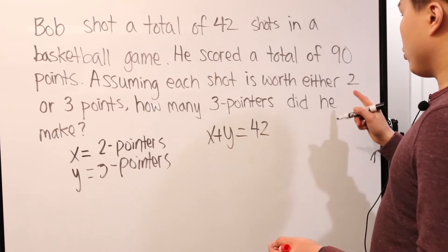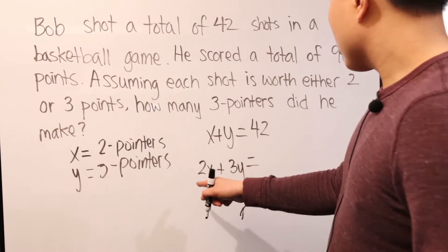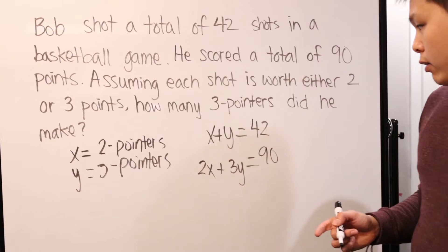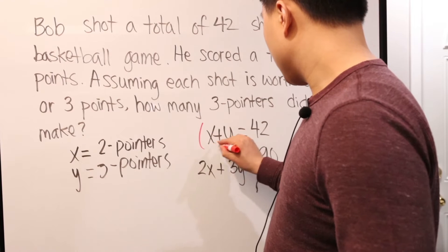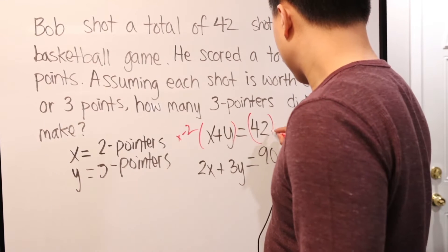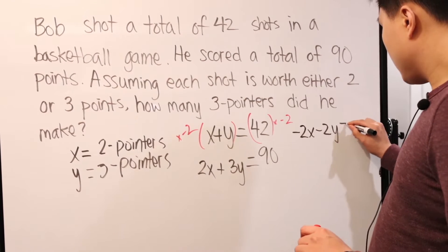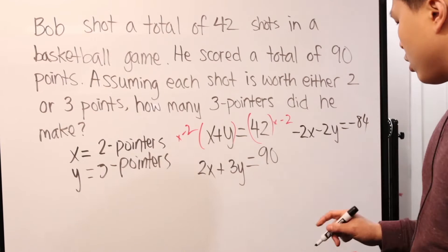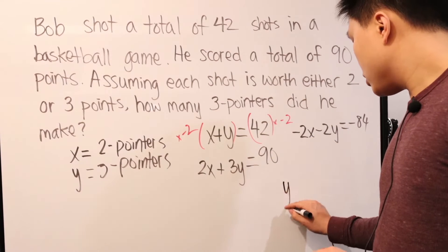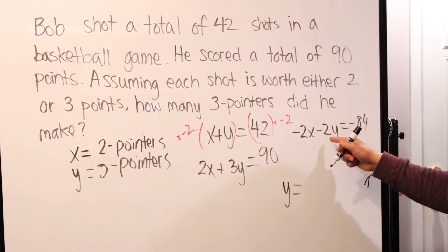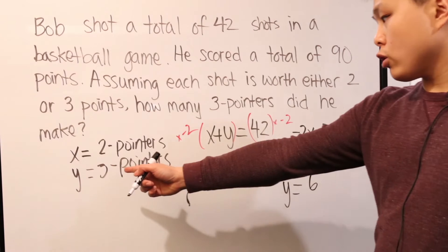We know that X plus Y is the total number of shots, which is 42. And we also know that, since it's worth two points every shot and three points every shot for the Y, we know that after all, their total point is 90. And then, you try solving it from there. What you would do is, if we wanted to use, for example, elimination, what we do is we multiply everything here by negative two. And then what we get is we have basically minus 2X minus 2Y equals negative 84. And we have our original 2X plus 3Y equals 90 and then we add them together. The X cancel out, the Y ends up being just Y because 3Y plus negative 2Y is going to be Y. And then 90 plus negative 84 is just six. So, in this case, Y is our three-pointers, which is six.